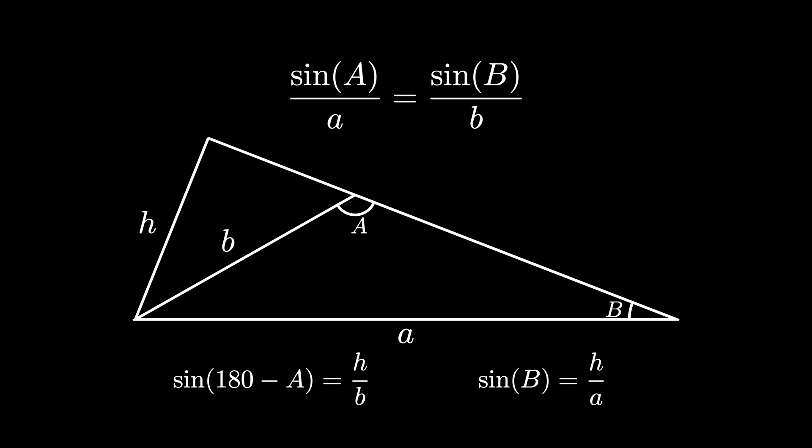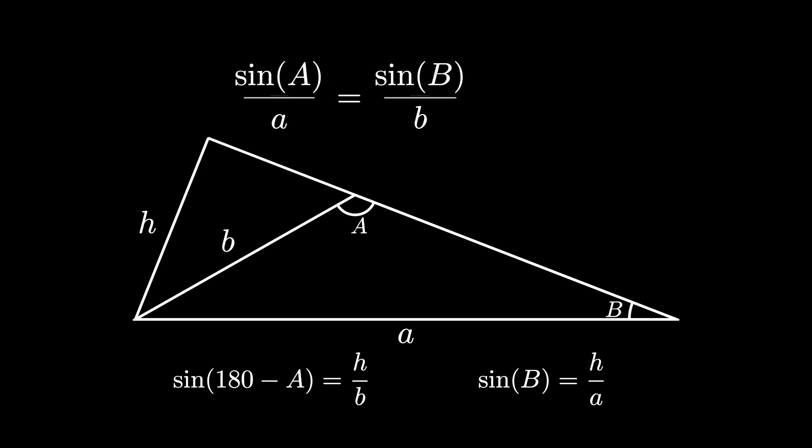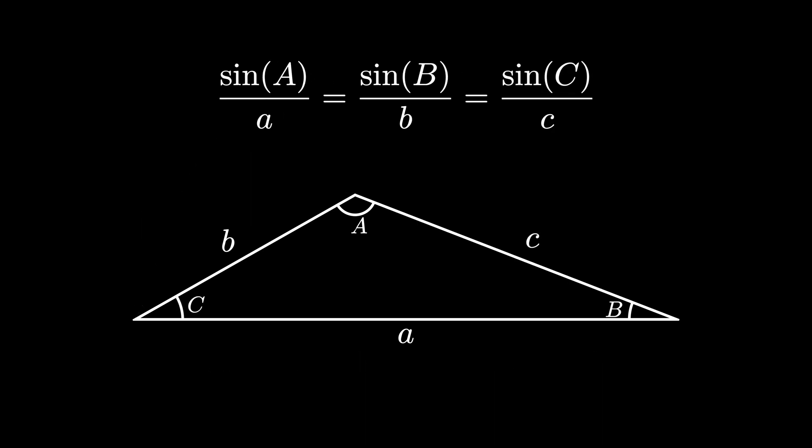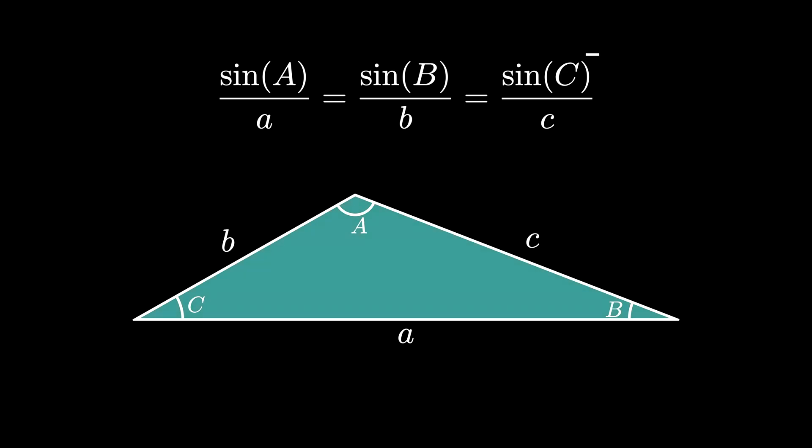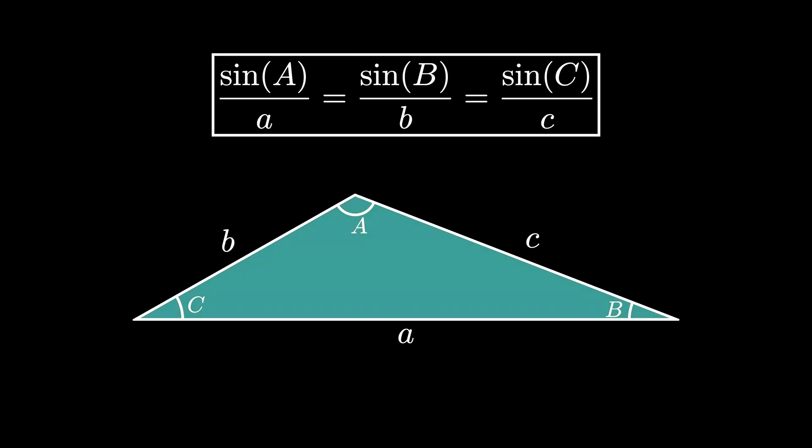When we couple this result with our first computation, we see that the sine of angle A divided by A equals the sine of angle B divided by B, and that equals the sine of angle C divided by C, where A, B, and C are the side lengths of a triangle with opposite angles capital A, capital B, and capital C respectively. This is known as the law of sines for triangles.